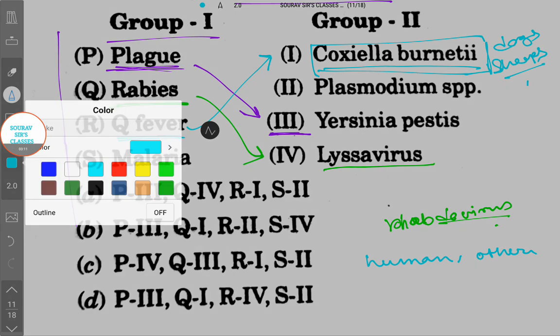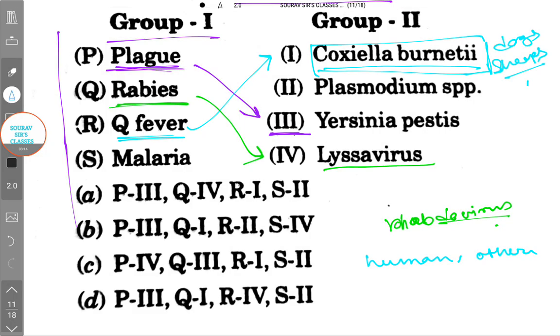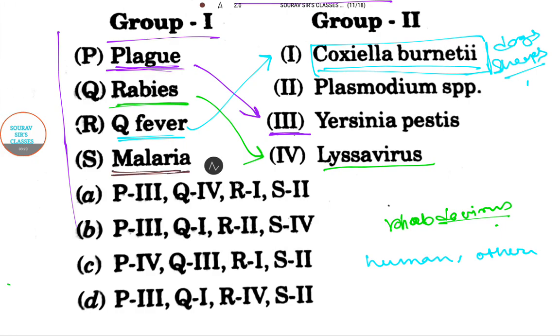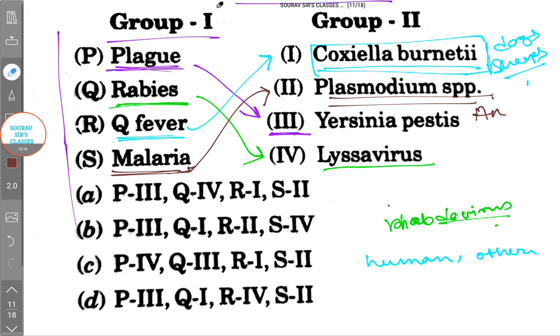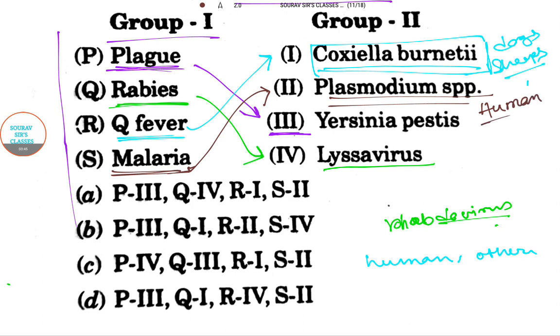Now the last option is Malaria - I'm changing my color again. Obviously the last option we have left for malaria is Plasmodium spp., which affects humans and causes malaria.